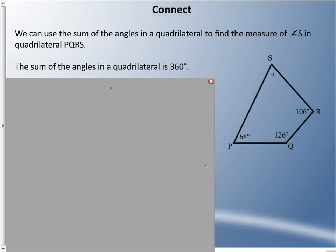We can use the sum of the angles in a quadrilateral to find the measure of angle S in quadrilateral PQRS. That's how I identify this—I have a shape on the side, PQRS. Those four line segments create that quadrilateral. We know from the previous slide that the sum of the angles of the quadrilateral is 360 degrees.